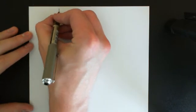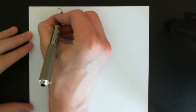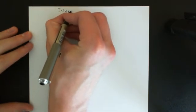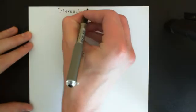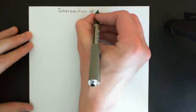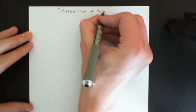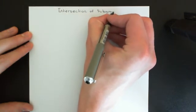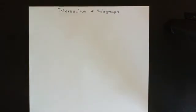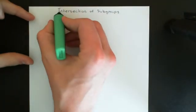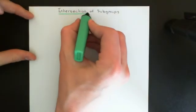Welcome to this next video in the playlist on group theory. In this video, what we're going to discuss is the intersection of two subgroups. What we're going to see is that if you intersect two subgroups, then the intersection of the two subgroups is actually another subgroup. This is a very important fact that is used in the proof of many theorems later on in group theory.